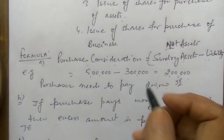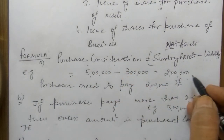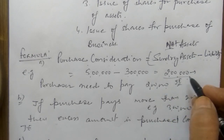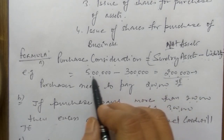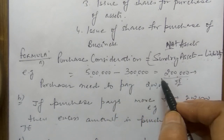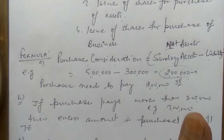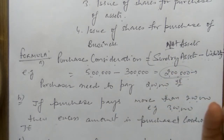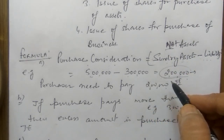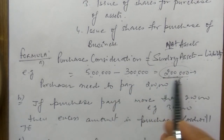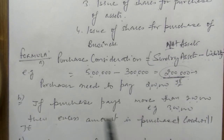For example, if assets are ₹5 lakh and liabilities are ₹3 lakh, the purchase consideration is ₹2 lakh. So the payment to the vendor is only ₹2 lakh. The company bought assets worth ₹5 lakh, took over ₹3 lakh liabilities, and the difference — ₹2 lakh — is the purchase consideration payable to the vendor.